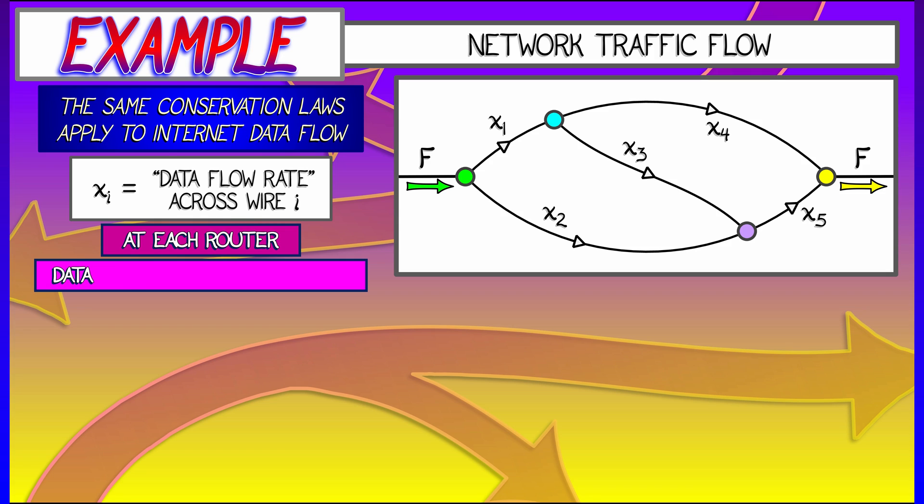At these routers, at these nodes where there's branching, the net data flow rate in has to equal the net data flow rate out. So for example, if you look at that blue node at the top,